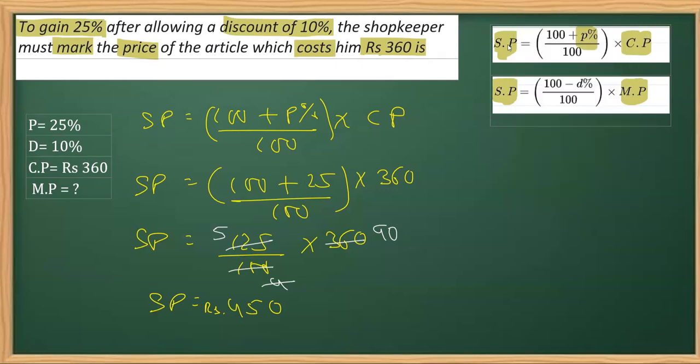As I said next, as we get one value in order to get the other, we will be applying the second formula here. This time I'm going to use the second one in the order of the screen. SP is equal to (100 minus D percent)—D stands for discount—into mark price.